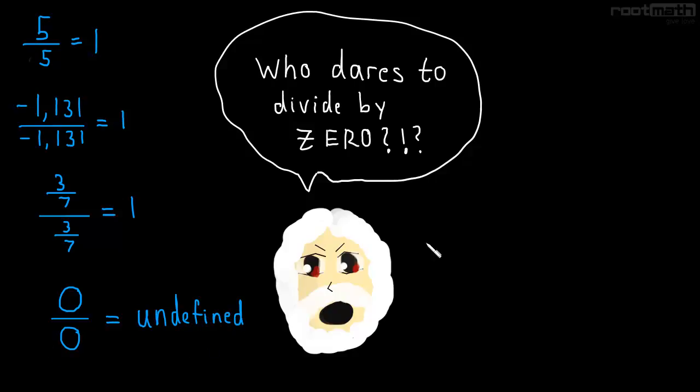So, we end up with this nice little rule. If a is not equal to 0, then a divided by itself is equal to 1. So, what does this have to do with cancelling fractions?